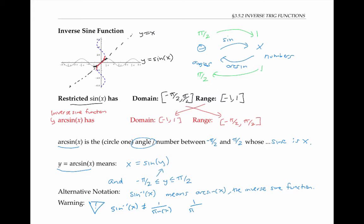One over sine of x — the reciprocal function — is another word for cosecant of x. But sine to the negative one of x is another word for arc sine of x, the inverse sine function, which is not the same thing as a reciprocal function.